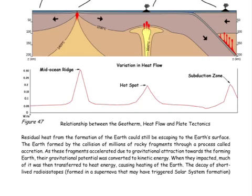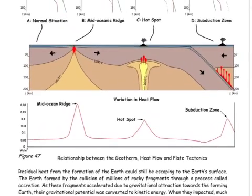These peaks relate to different parts of the Earth's surface. If you look at the diagram above it as well, you can see the highest peak — the highest amount of heat flow, which is 0.3 watts per meter squared — occurs at what is known as the mid-oceanic ridge.